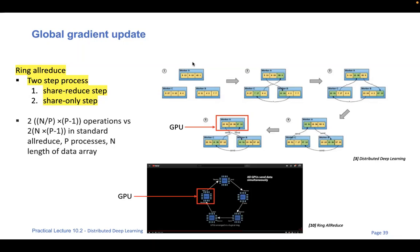I understand this might take a while to grasp — it's not an easy concept, which is why I also leave a link to a YouTube video by NVIDIA that explains the Ring AllReduce approach well. The important concept here, besides how it specifically works, is that if you look at the formula, you can get rid of the dependency on the number of processes compared to the parameter server formula below. This means it should run smoothly whether you're using three GPUs or 1000 GPUs, as people are doing on the JUWELS Booster HPC system at JSC.